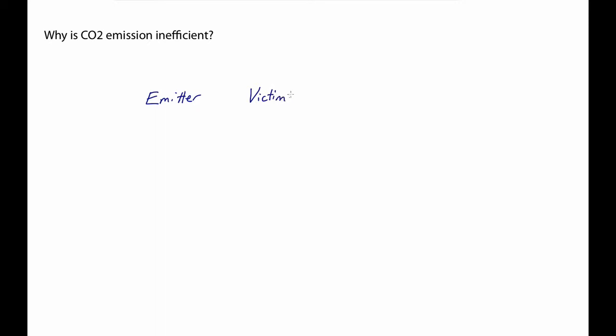There are two parties. There is an emitter, someone like you. And then there's a second party, which is really a group. Those are the victims, we'll say. The people who suffer the effects of carbon dioxide emission. And, putting it very simply, there are just two salient courses of action here. The emitter can emit carbon dioxide, or can fail to emit carbon dioxide.